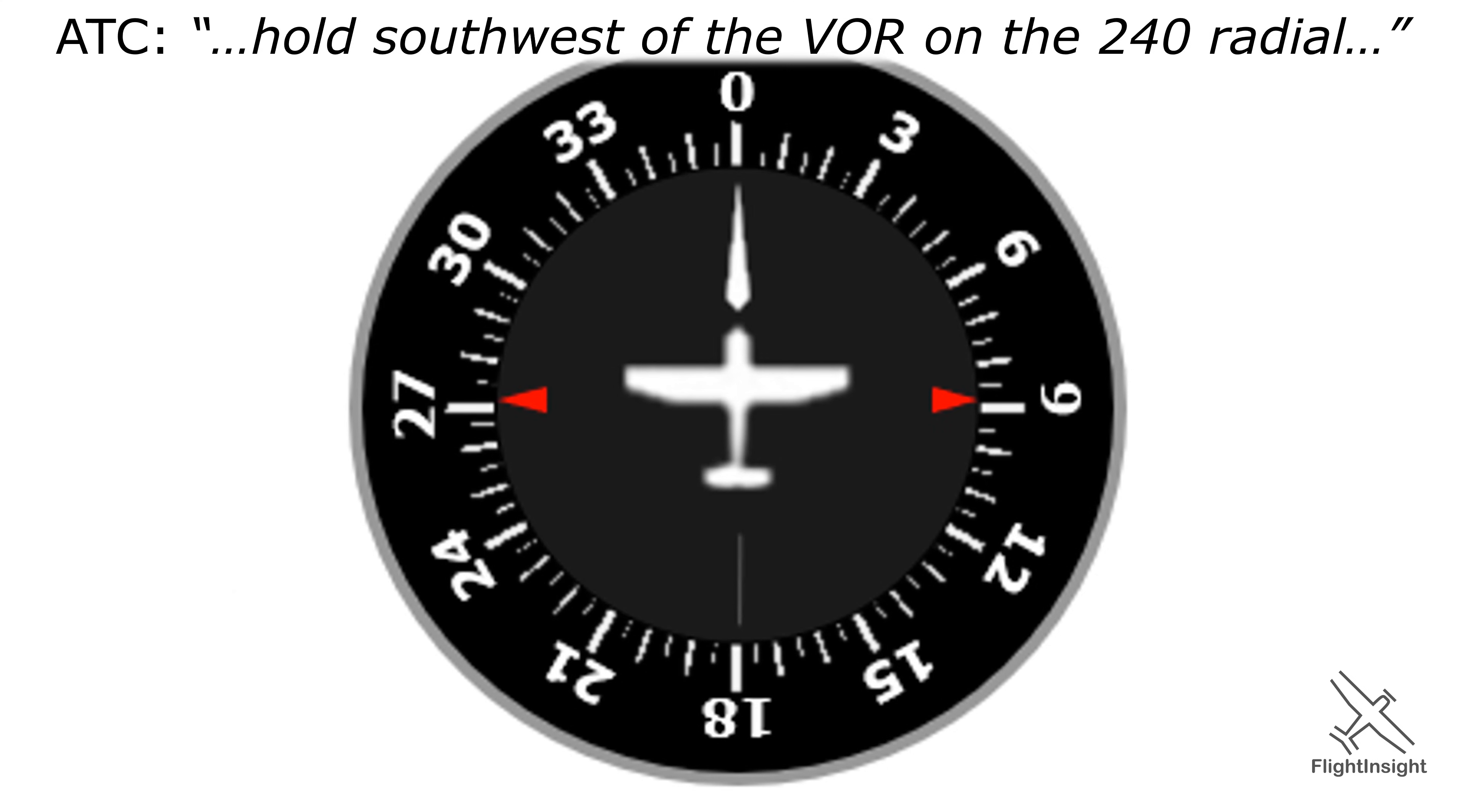But without seeing the diagram, it's actually still really easy to visualize this entry if you're only given verbal instructions. ATC told us the radial, 240, that's all we need to know. Again, we'll drop our fix.